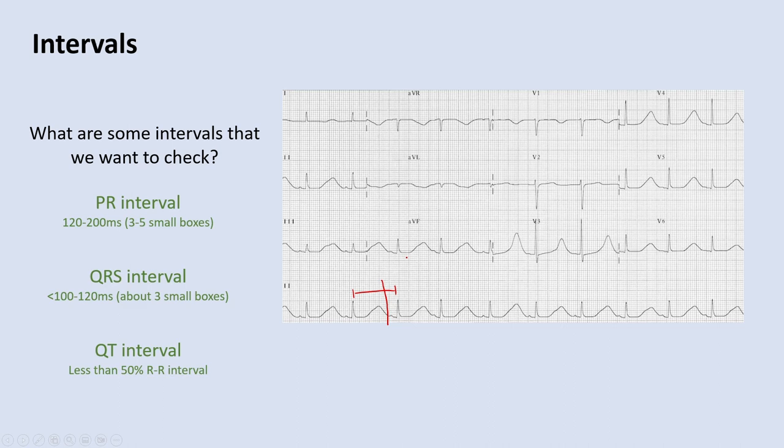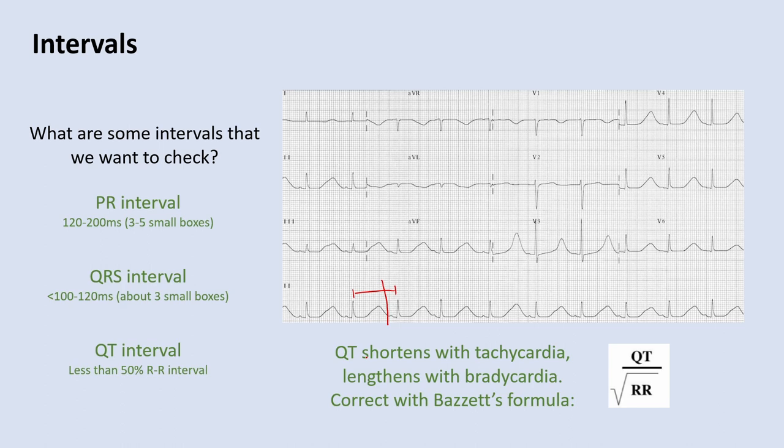A couple of things to note about QT intervals: they shorten with tachycardia but lengthen with bradycardia. So if somebody is bradycardic, they're at higher risk for torsades than if they had a tachycardic heart rate. To correct the QT interval based on heart rate, we use the Bazett formula, which is often automatically calculated by computers these days.